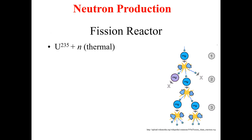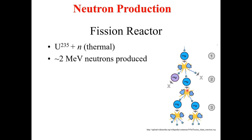We can also get neutrons from the fission chain reactions performed in nuclear reactors. In fission chain reactions, we utilize thermal neutrons for the fission of uranium-235. As a product, along with the daughter nuclei, we get fission products and energy. We also get an average of approximately 2 MeV neutrons, which is the average number of neutrons produced during fission reactions performed in nuclear reactors.